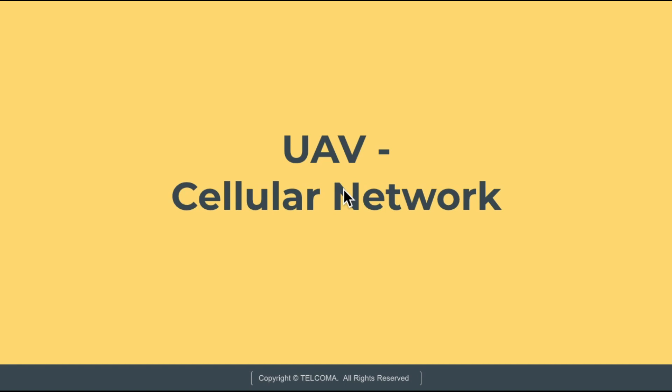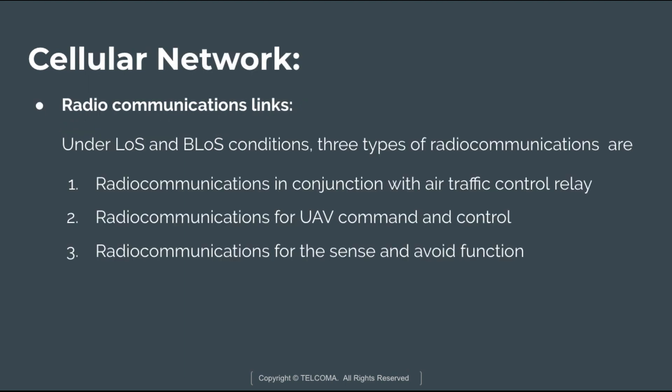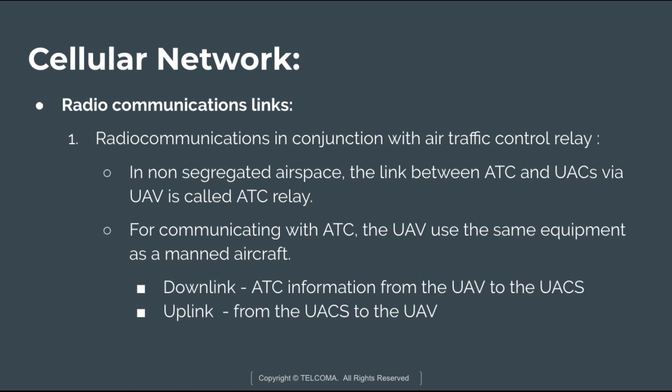Welcome to the class on UAV. Today we are going to discuss UAV cellular networks. In this chapter, we will discuss cellular radio communication links, BLOS and VLOS links. Starting with radio communication links — communication is key in UAV systems due to the remote nature of operations. Under LOS and BLOS conditions, three types of radio communications exist: radio communication in conjunction with air traffic control relay, radio communication for UAV command and control, and radio communication for the sense and avoid function.